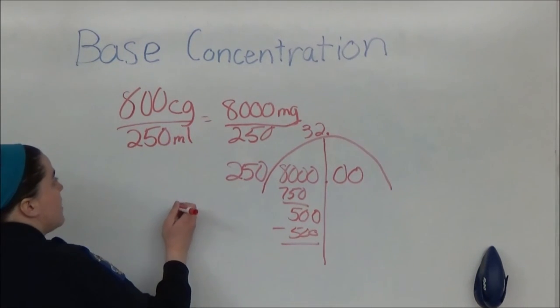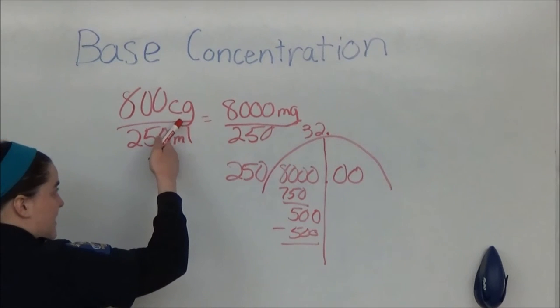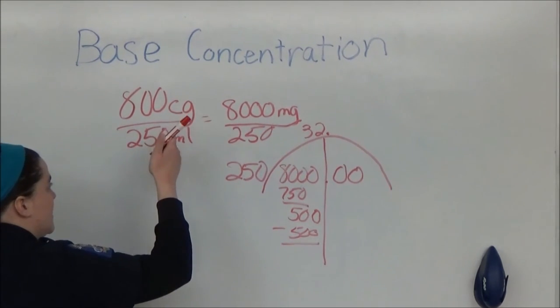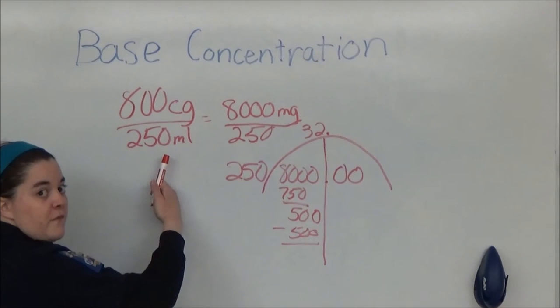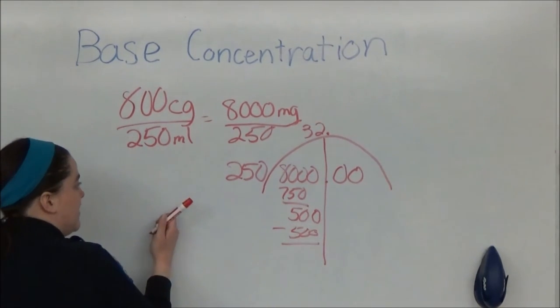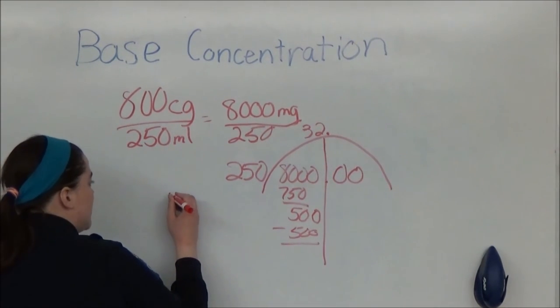So 800 centigrams per 250 milliliters is equal to 32 milligrams per milliliter.